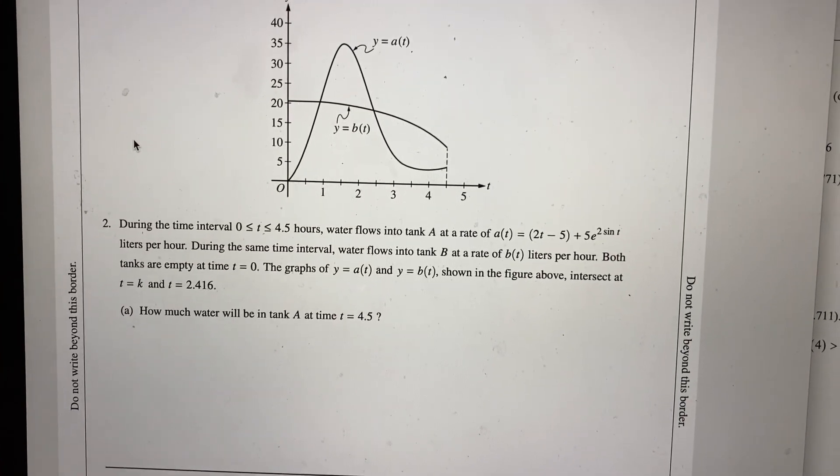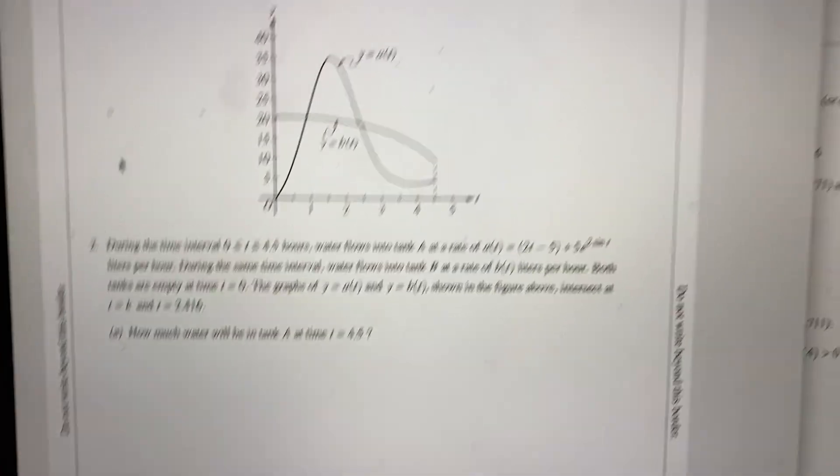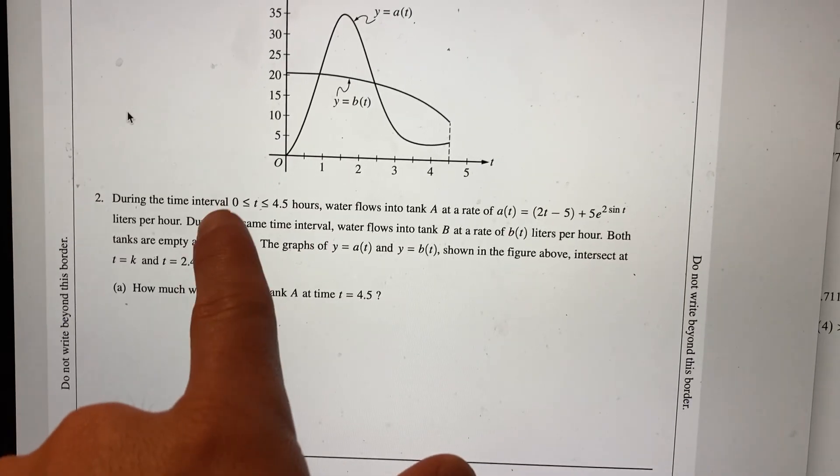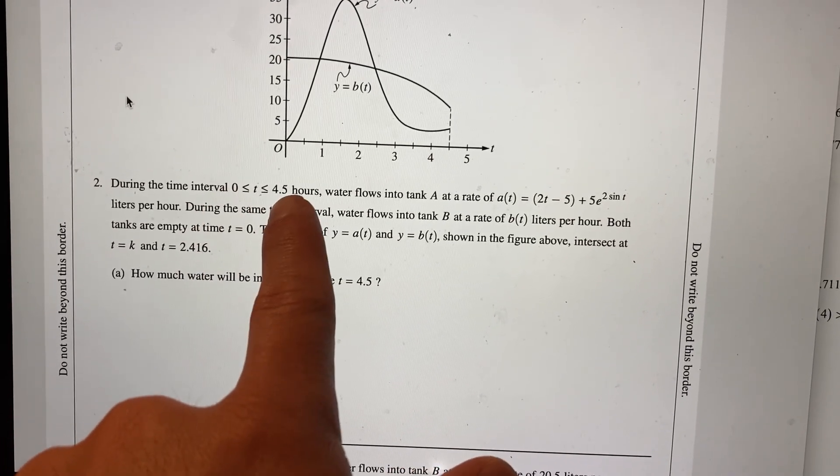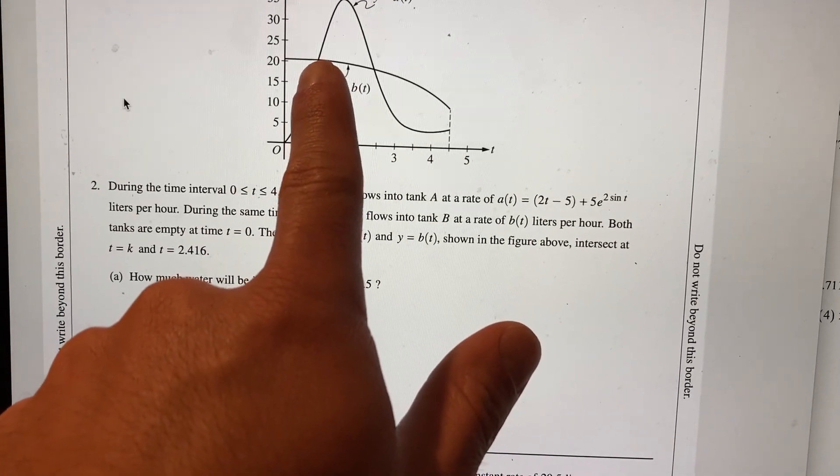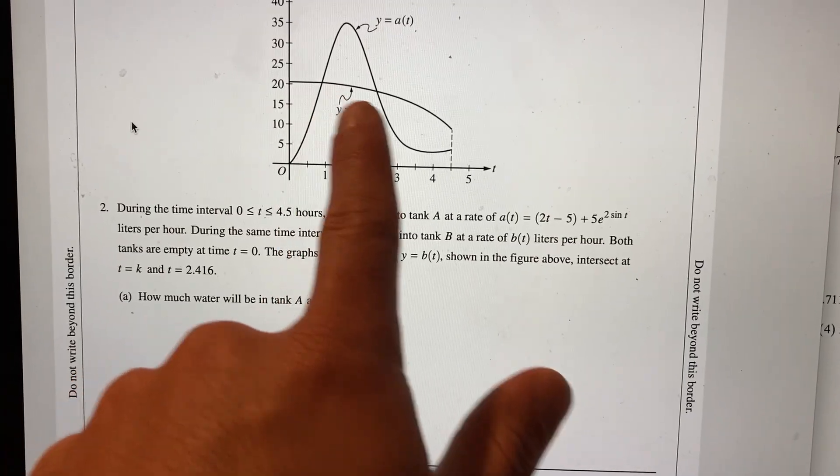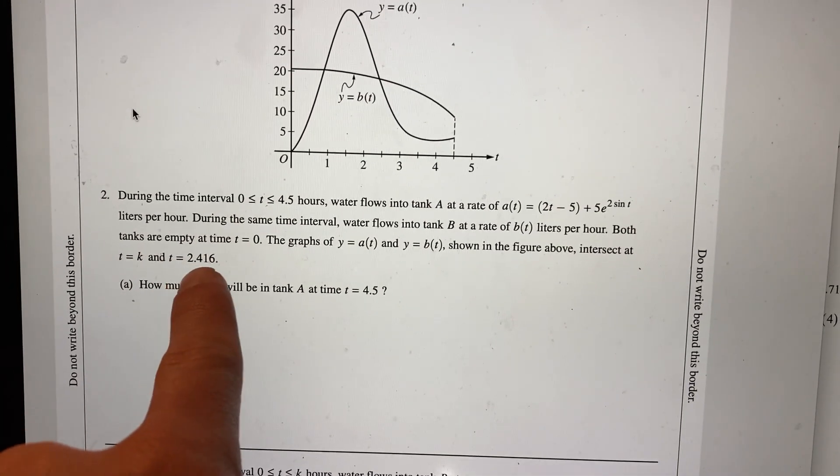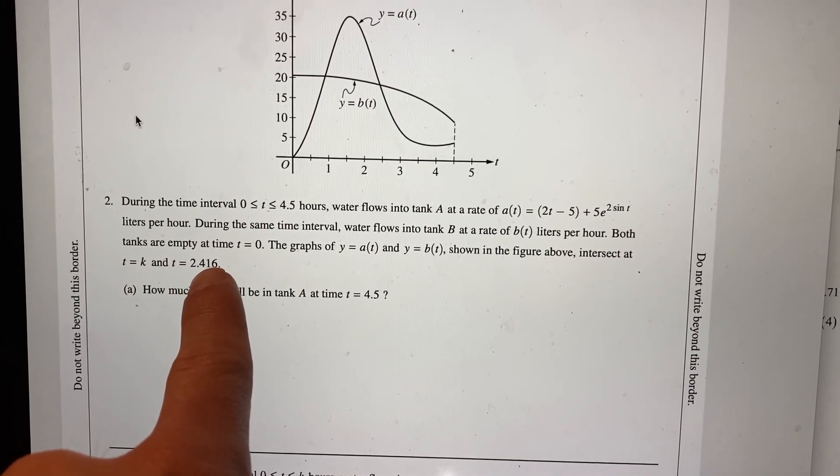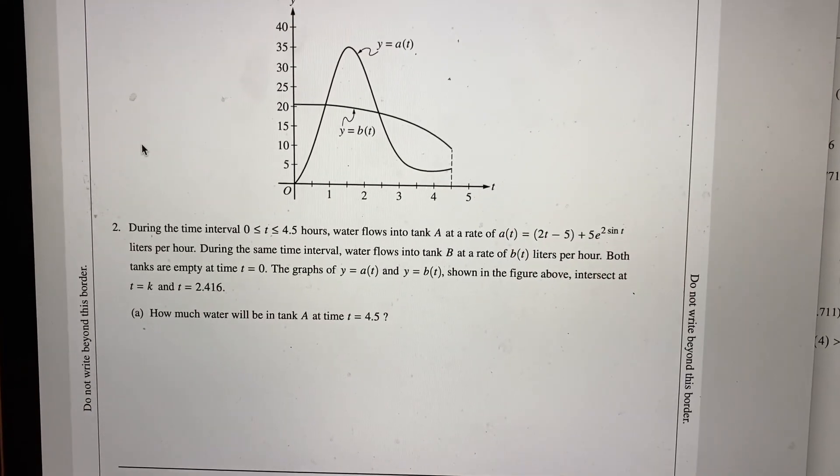Okay, now this one. So we have our graph, it's in here. Here's our interval 0 to 4.5 and this value is some K. Some value we don't know, it gives us this one later on. It's 2.416, gives us a(t), b(t).